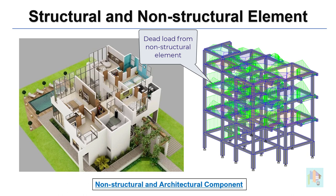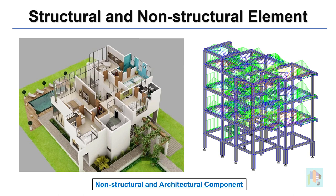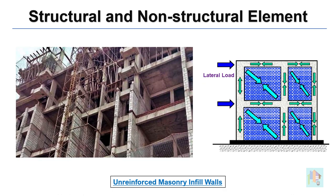There is one problem. Before ignoring any element, we need to evaluate its contribution and accordingly differentiate between structural and non-structural elements, else the analysis results will be affected. For example, if we don't model a brick wall or consider its stiffness during analysis, that might increase the section size. External brick walls provide enough stiffness against lateral load, and when a seismic or wind load is applied on the structure, these walls try to resist the lateral movement. So we need to consider the stiffness of the brick wall.